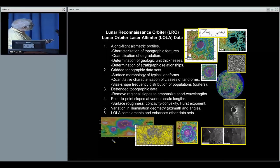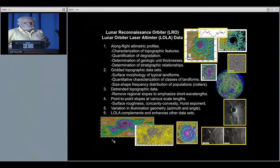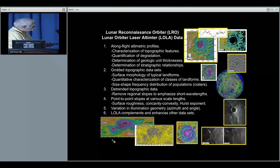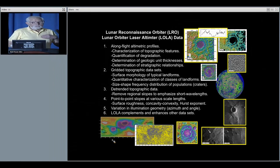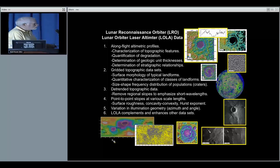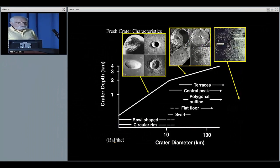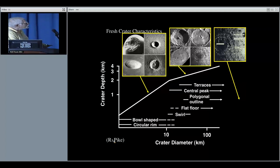You can look at derived products like detrended topographic data. It removes the regional slopes to emphasize short wavelength variations. Very effective. You can also look at point-to-point slopes at various scale lengths. This will get you surface roughness, concavity, convexity relationships of various terrains and landforms. Parameters like Hurst exponents give you an interesting idea about the shape of the topography. You can use these data to look at variation in illumination geometry. The topography allows you to illuminate things from any angle and any azimuth and this has huge implications for your ability to characterize the landforms and understand them.